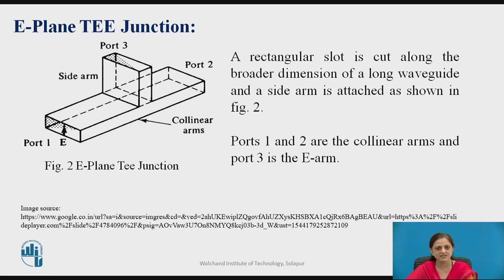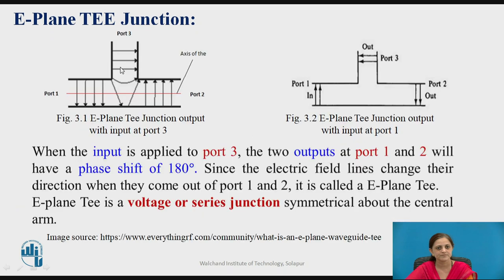Now we will see the details of this E-plane T-junction. The side arm is connected through a slot cut along the broader dimension of a long waveguide, and a side arm is attached as shown in this figure. These have three ports: port 1, port 2, and port 3. Port 1 and port 2 are the collinear arms and port 3 is also known as the E-arm. When the input is applied to port 3, the outputs at port 1 and port 2 will have a phase shift of 180 degrees. Since the electric field lines change their direction when they come out of port 1 and 2, it is called the E-plane T-junction.